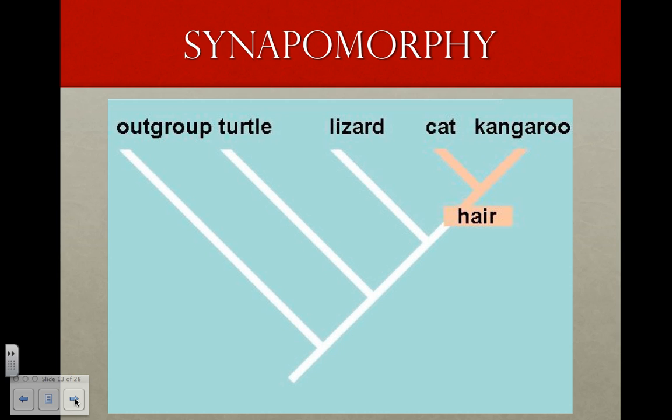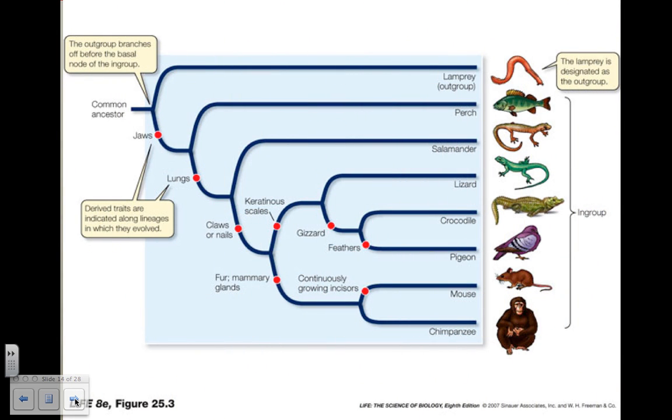A synapomorphy is a derived trait that is shared among a group of organisms and is viewed as evidence of evolution. For example, mammary glands and fur in chimps and mice, and feathers in birds. By combining this information, we can construct a phylogenetic tree. This diagram shows the tree for the eight vertebrates and is based on the traits we used, and we assume each derived trait evolved only once. Typically, biologists construct a tree using thousands of traits.